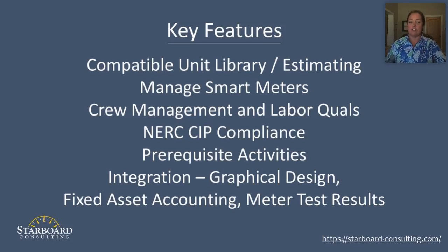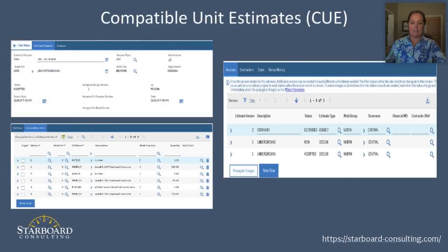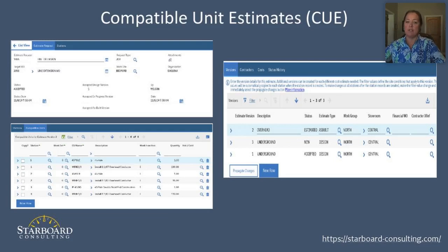There are three key features of the Maximo utility solution that set it apart from core Maximo and make it worth your investment. The first is compatible unit estimating, or CUE. If you're not familiar with the term, compatible units or CUs are construction templates that define labor, materials, tools, and services required to perform construction work. You can think of them as job plans on steroids.